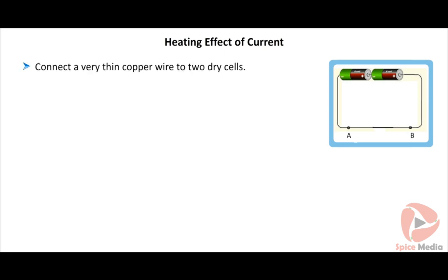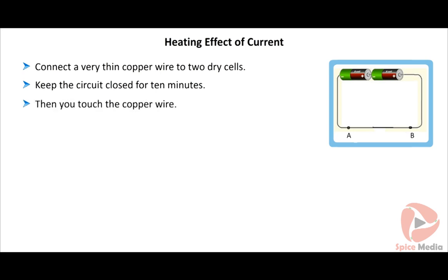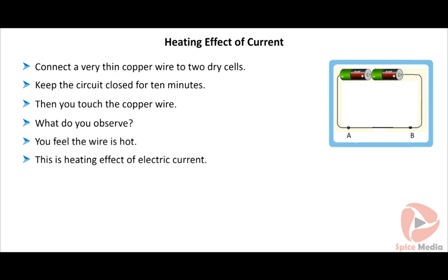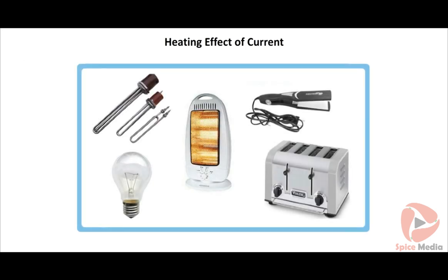We will experiment on the heating effect of current. When electric current is passed through metal conductors for some time, heat is produced. Connect a very thin copper wire to two dry cells, keep the circuit closed for 10 minutes, then touch the copper wire — you can feel the wire is hot. This is the heating effect of electric current. Household appliances such as water heater, room heater, soldering rod, hairdryer, electric iron, electric toaster, electric cooker, and electric bulb work based on the heating effect of current.